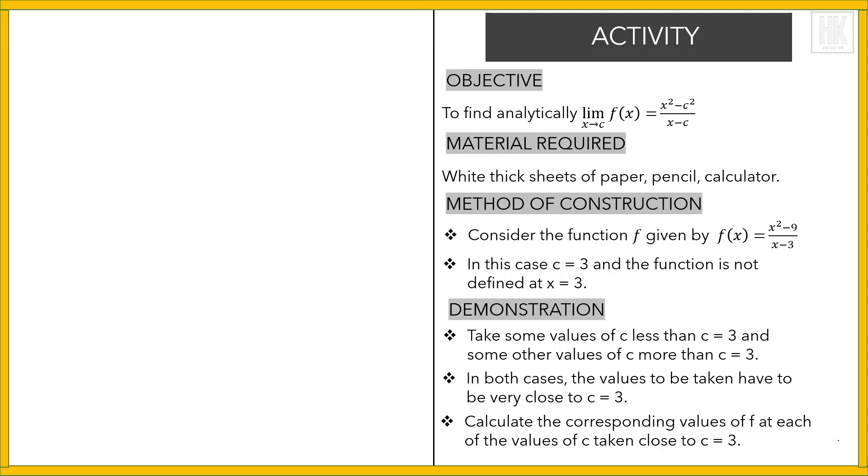Now write the values of f(x) in the table. f(x) = (x² - 9)/(x - 3). If you solve this function, taking 9 as 3², we get (x² - 3²)/(x - 3).